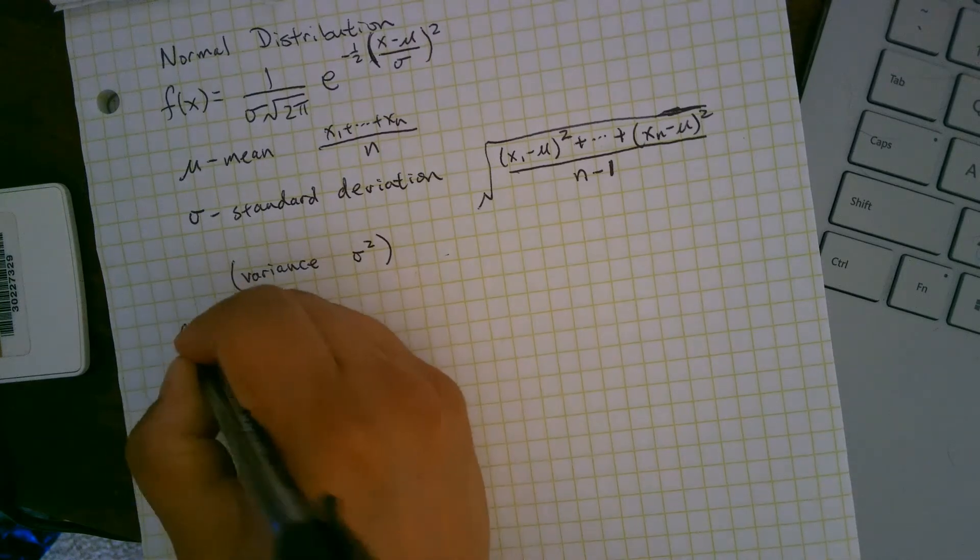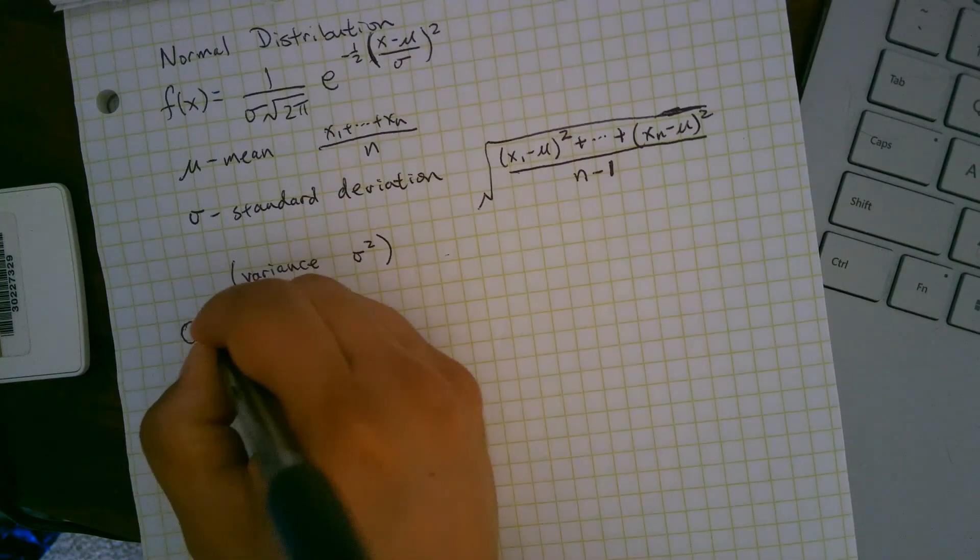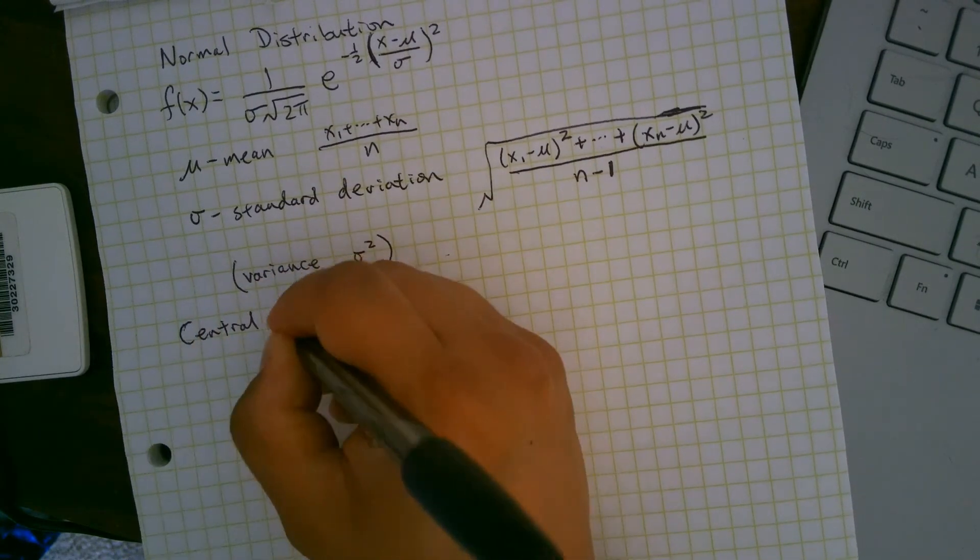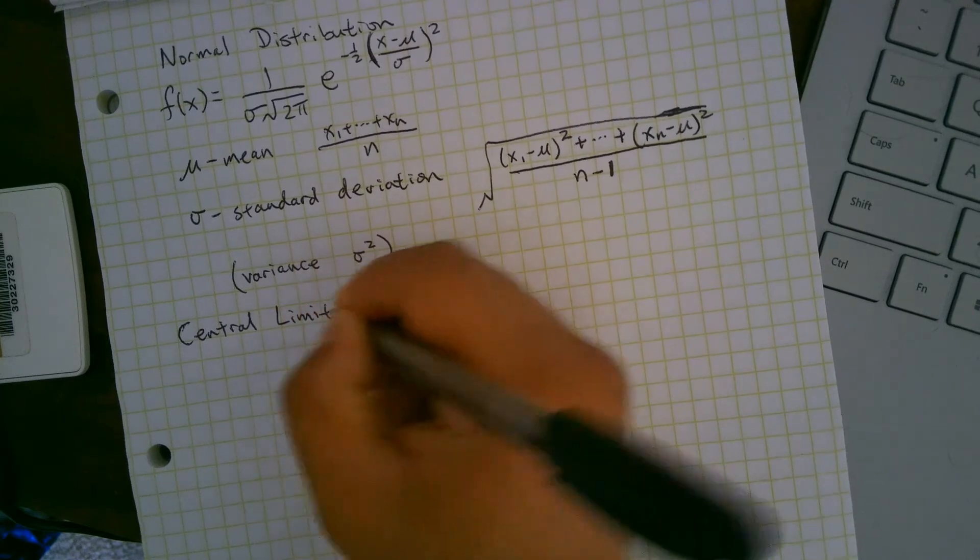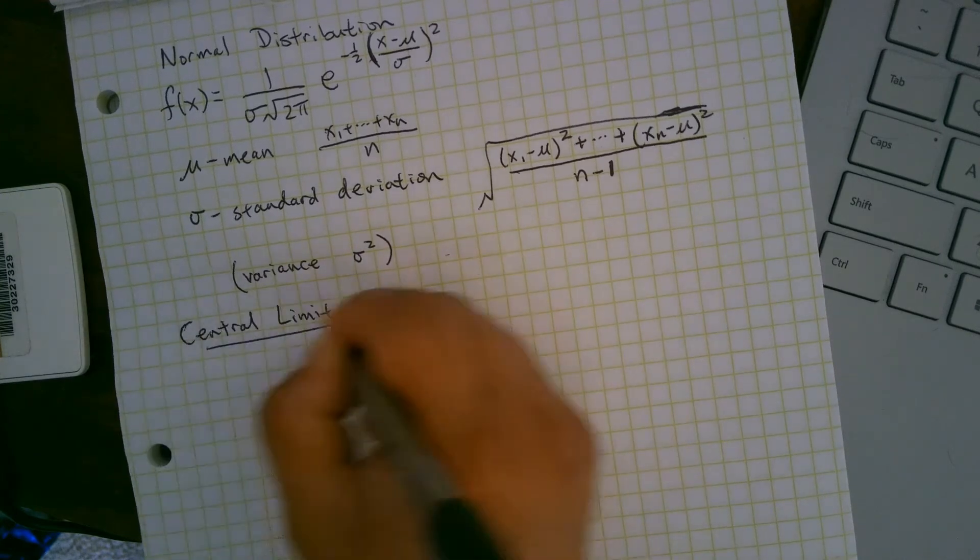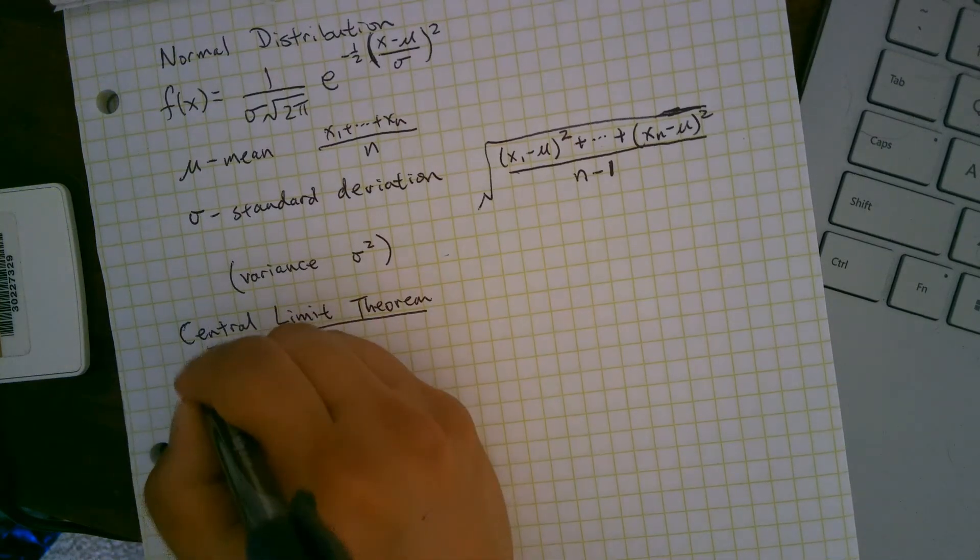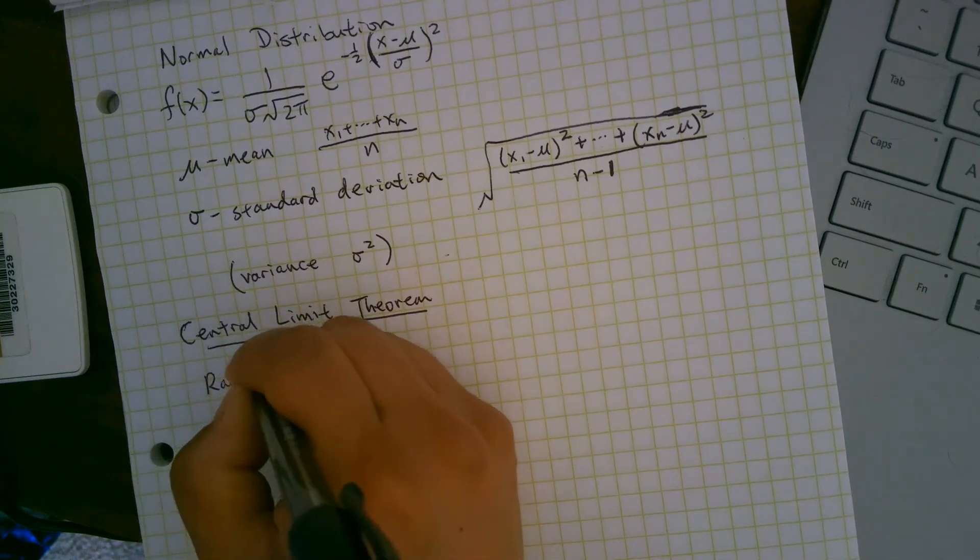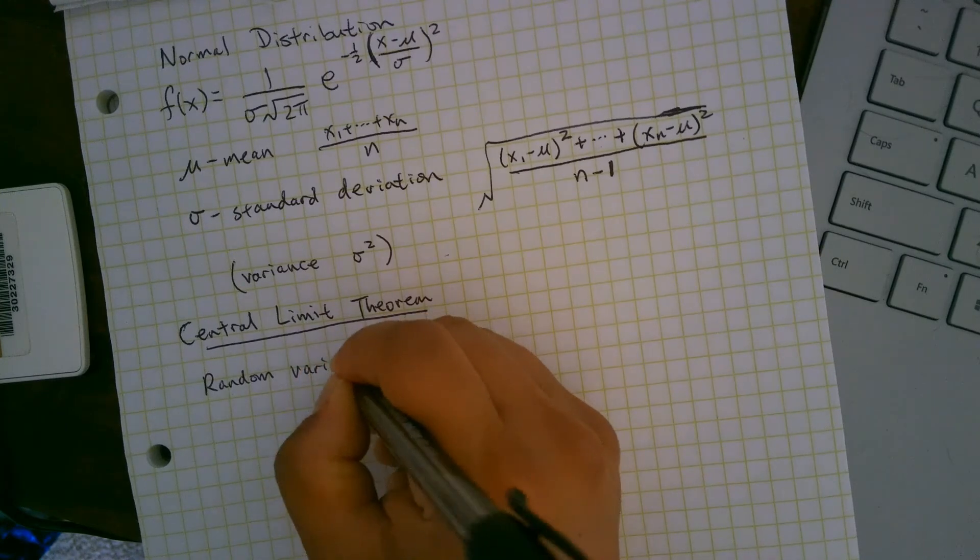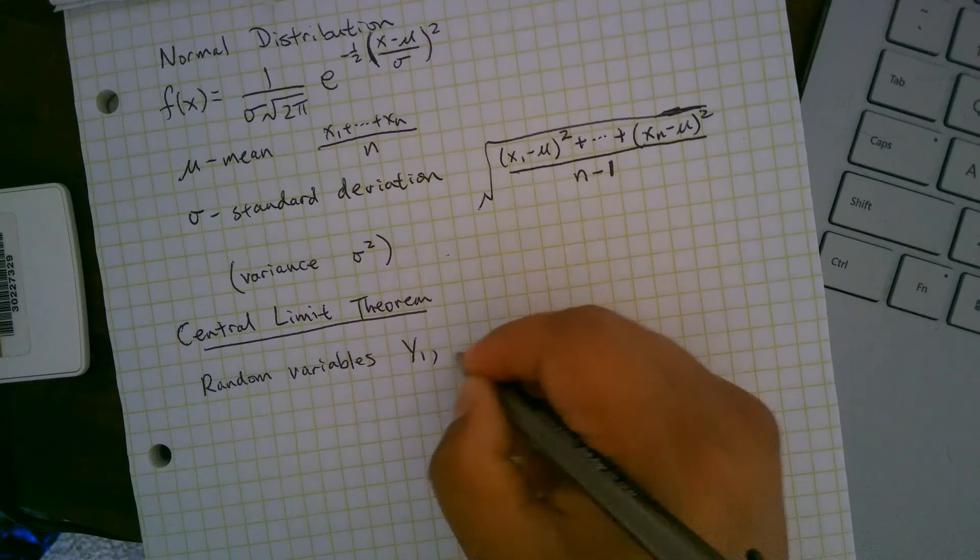Okay. So why do we care? Why do we care about this? Because it shows up in real life. And the central limit theorem, which we're not going to prove, but there's proof in probability theory. Central limit theorem is the thing that says this shows up a lot. Central limit theorem says, if you have random variables, variables that can take on multiple values with some probability distribution, like we saw in the last video, y1 through yn.